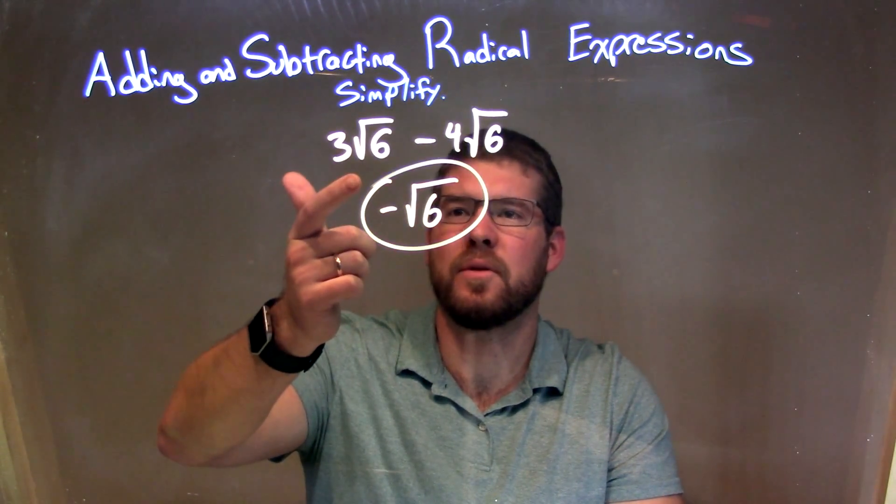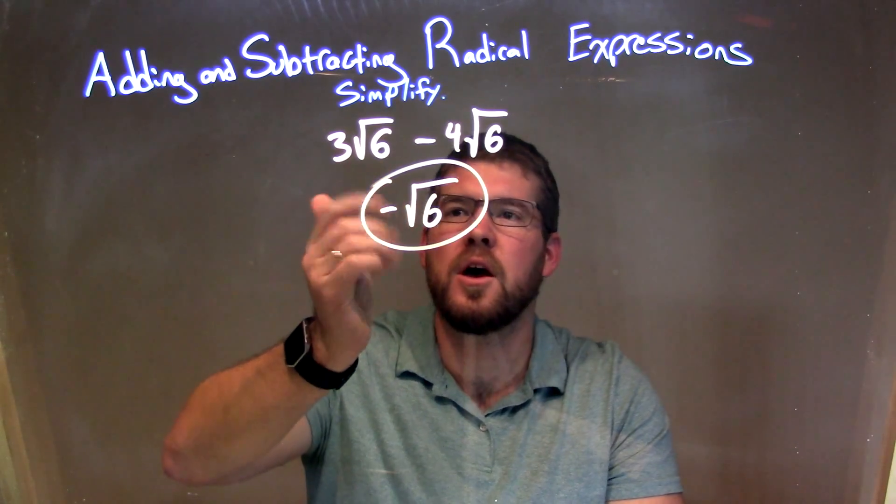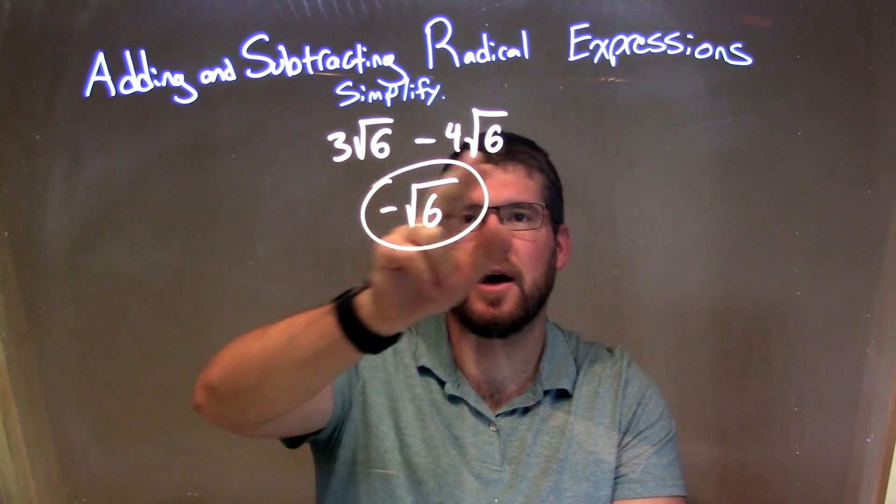So let's recap. We're given 3 square root of 6 minus 4 square root of 6. Because they had the same square root value right there,